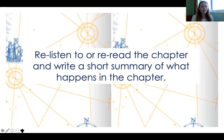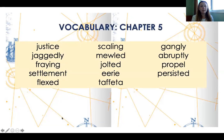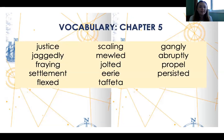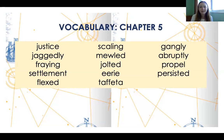Chapter five: re-listen, re-read, write a summary. Vocabulary includes: justice, jaggedly, fraying, settlement, flexed, scaling, muled, jolted, eerie, taffeta, gangly, abruptly, propel, and persisted.